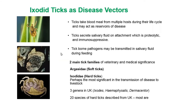Ticks take blood meals from multiple hosts during their life cycle and may act as reservoirs of disease. They secrete salivary fluid on attachment, which is proteolytic — it basically lyses a local vacuole in the skin where they bite. The salivary fluid is immunosuppressive, so they get less bother from the immune system of the host. During this process, tick-borne pathogens may be transmitted in salivary fluid.